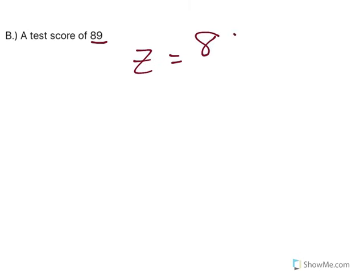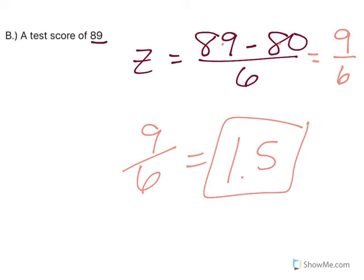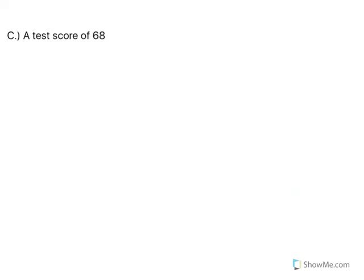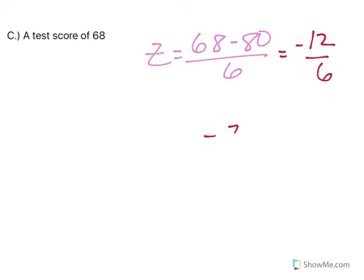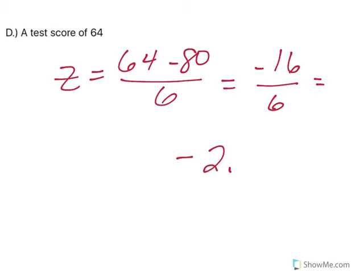For a test score of 89: z equals the value minus the mean over the standard deviation. The mean is 80 and the standard deviation is 6. 89 minus 80 is 9, and 9 over 6 is 1.5. You always want to go to the nearest tenth or hundredth depending on the table. For a test score of 68: value minus the mean over the standard deviation gives negative 12 over 6, which is a z-score of negative 2. For 64: 64 minus 80 divided by 6 gives negative 16 over 6, which is negative 2.67.